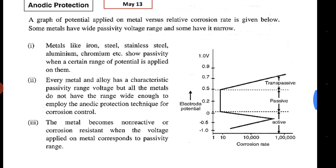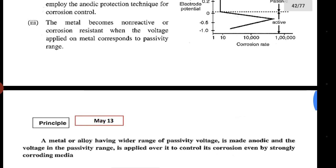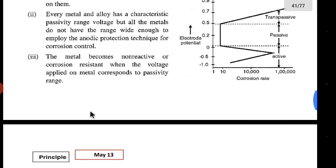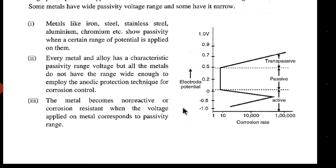The whole process is based on these three important points. The principle of anodic protection: a metal or alloy having a wider range of passivity voltage is made anodic, and the voltage in the passivity range is applied over it to control corrosion even in the presence of strong corroding media.